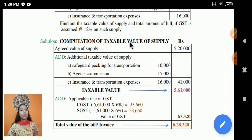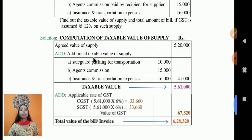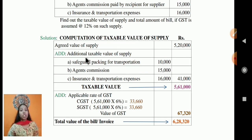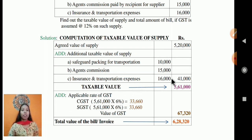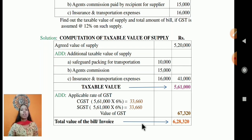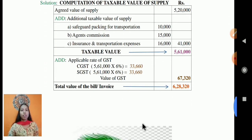Now come to the answer. The computation of taxable value: take the agreed value of supply, then add the additional items not included — safeguard packing, commission, insurance, and transport. Add these together and you get the taxable value. After that, apply the GST rate of 12% split between CGST and SGST. Adding both gives you the total value of your invoice or bill. Thank you.